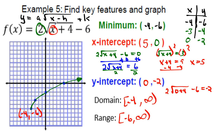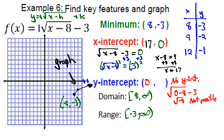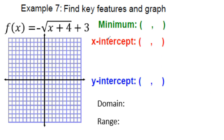Example 6 is yours to do — pause and try it. The correct answers: minimum is (8, −3) because x lied. The x-intercept is (17, 0). For the y-intercept, plugging in zero gave a square root of a negative, which is not possible — so there is no y-intercept, and the graph doesn't cross the y-axis. Domain and range use the vertex, and the graph opens upward.